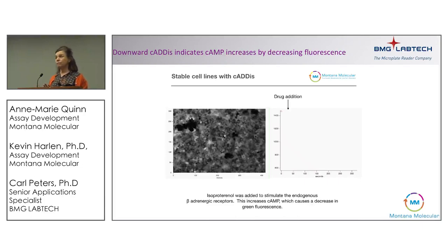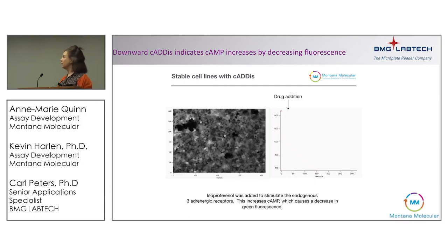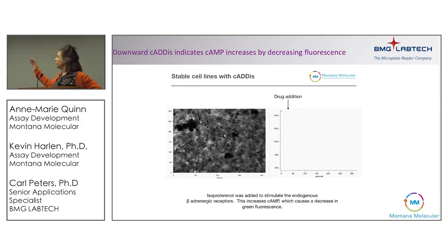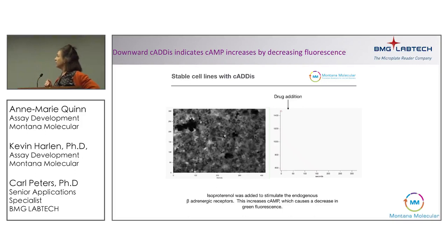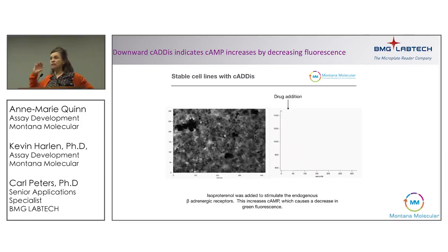Because this is a fluorescent protein-based sensor, we can also make stable lines that carry the sensor. This is an example of the CATIS assay for cyclic AMP — drug addition produces an immediate large change in fluorescence. Here the beta-adrenergic receptor is being stimulated with isoproterenol. This is a decreasing sensor — fluorescence decreases even though cyclic AMP is increasing. The nice thing is you have immediately bright cells, giving you confidence your assay is in your cells and ready to activate.